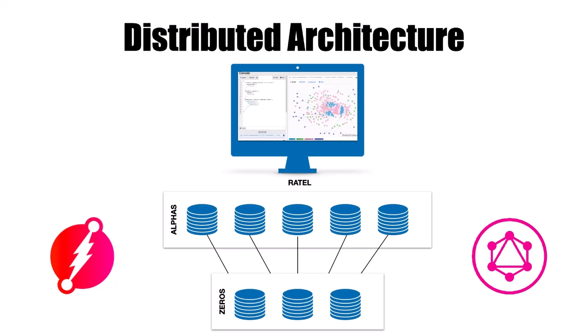Finally, we have the zeros. The zero is responsible for cluster coordination and membership — basically back-channel type operations — and normally you wouldn't interface with the zero. Because this is a distributed system, it's displayed with an odd number of hosts: five alphas and three zeros for group consensus. But if you didn't want a true HA distributed system, a simple architecture could be deployed with just one zero and one alpha node, plus a Ratel node if you wanted to use the UI.